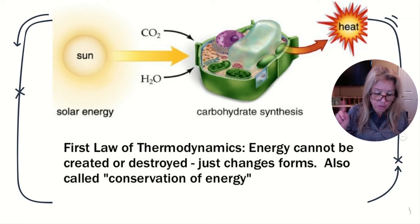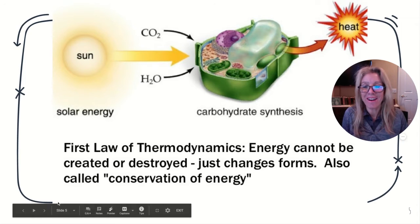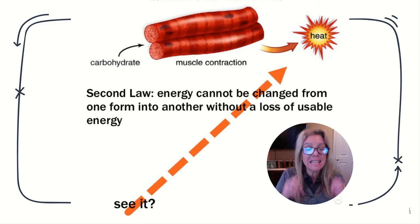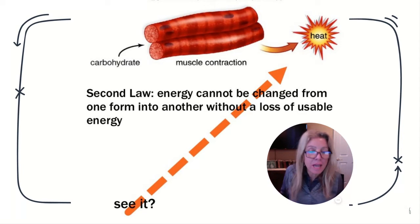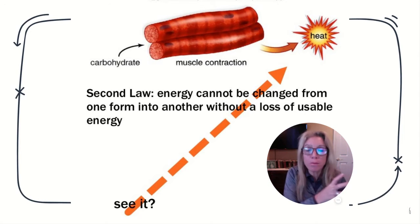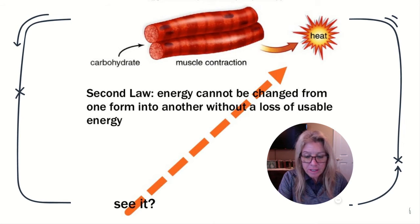So on your notes under the first law: energy cannot be created or destroyed, but it can be transferred and transformed. The second law of thermodynamics says that every time energy changes hands, some is lost as heat. Think about working out — you're burning fuel, but not 100% of it goes into your muscles; you can feel some coming off as heat. That's why a car engine also gives off heat. Every time energy changes form, some is lost — it's not 100% efficient.